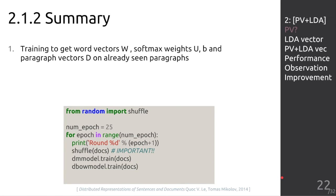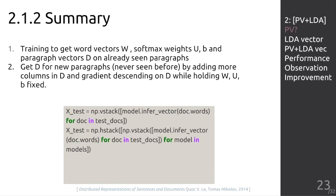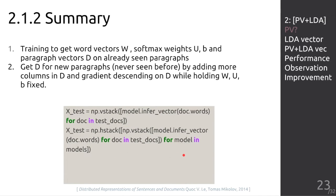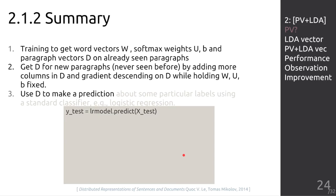To summarize: in the PV model, we first train to get the word vectors and the paragraph vectors on the already-seen paragraphs. Then we infer the paragraph vectors for new test movie reviews. Since the model provides two different paragraph vectors for each movie review, we will choose to use either one or concatenate them together. Last, we feed the paragraph vectors into a classifier.